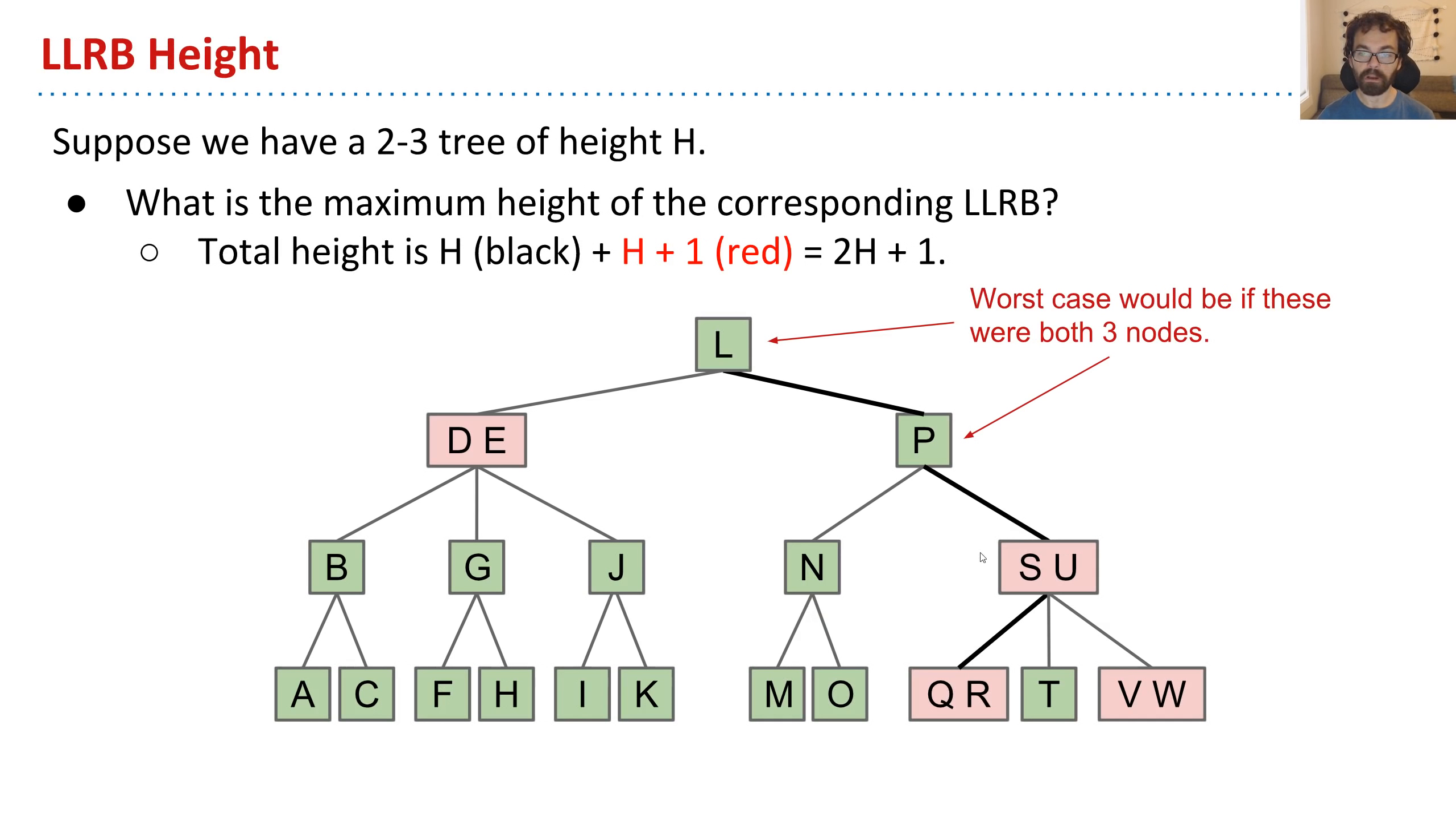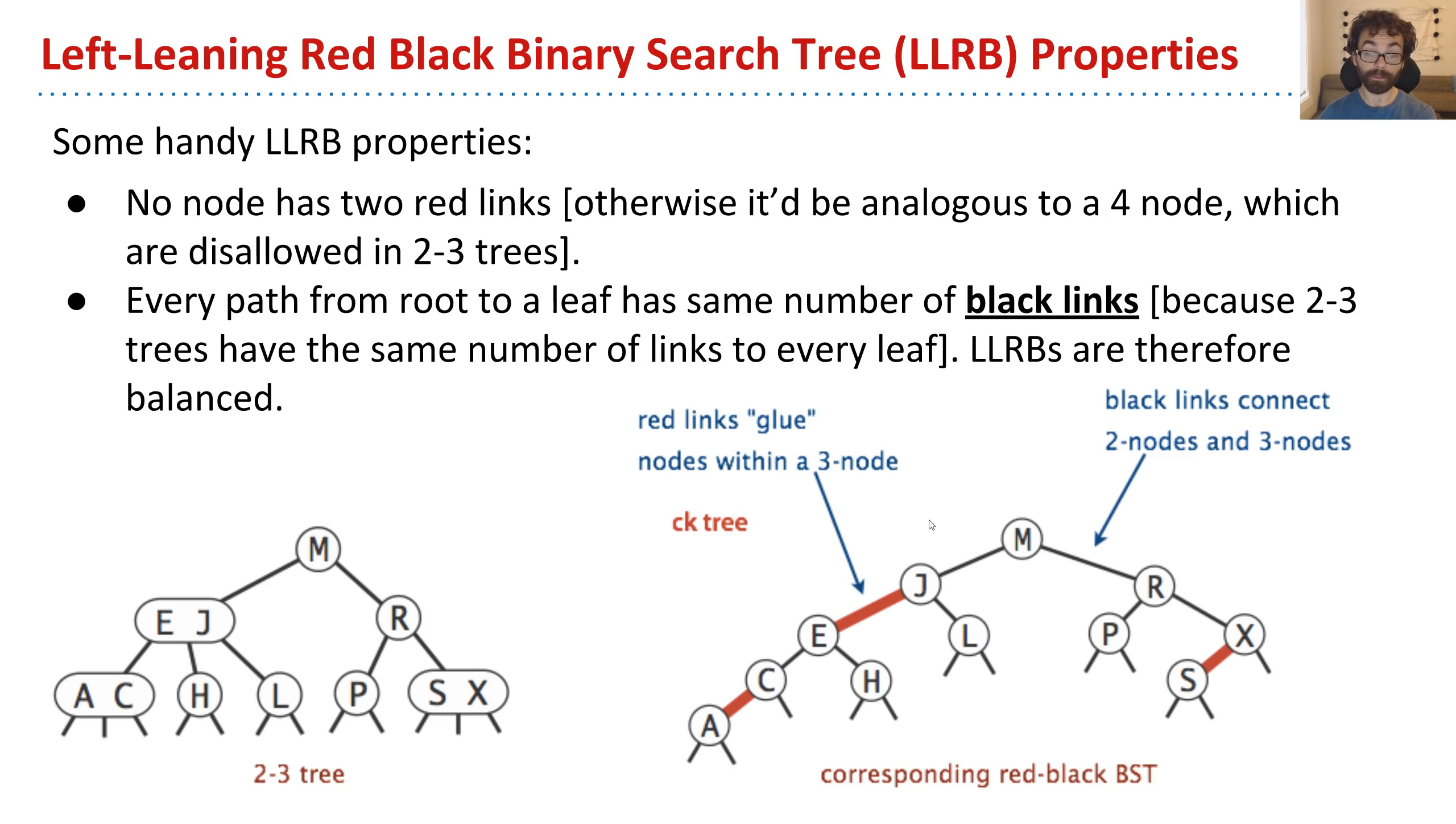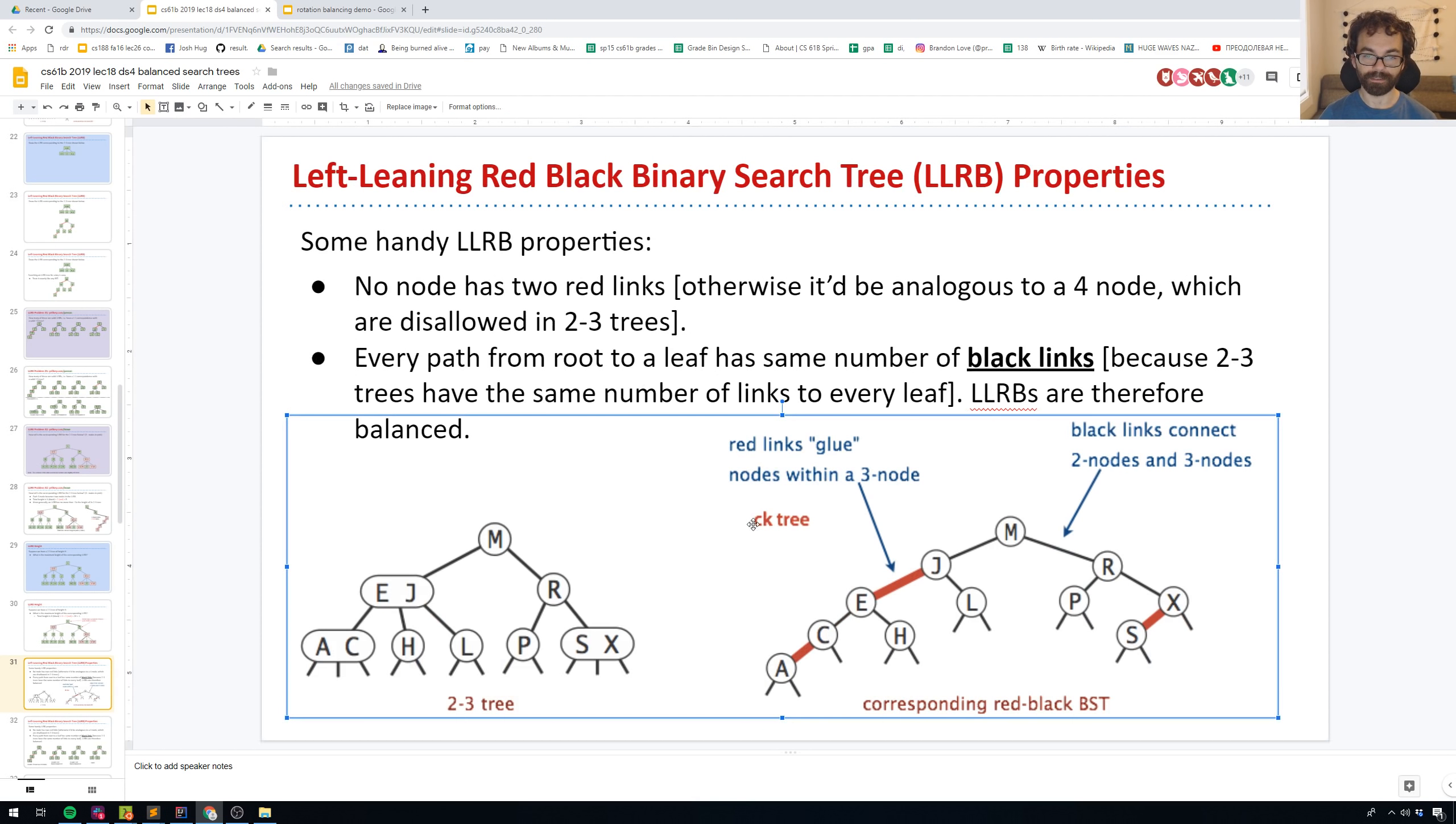Now, why is that? Well, you think about the analogy we were drawing here between LLRBs and two three trees. And we'll always have the same number of black links to each of these leaf nodes. The only thing that can vary is the number of red links along the way. So for example, this path has no red links. This path has two red links in the original tree. And we could see that. And maybe another example here.